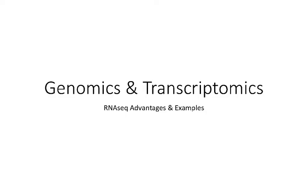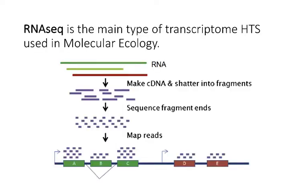In this video we'll talk about some of the advantages and examples of one specific type of transcriptome sequencing called RNA-seq, or RNA sequencing. RNA-seq is the main type of transcriptome high-throughput sequencing used in molecular ecology. When we talked about genomics, we had reduced representation RAD-seq, whole genome sequencing, and targeted sequencing like meta-barcoding. For transcriptomics, RNA-seq is really the main one you're going to see.